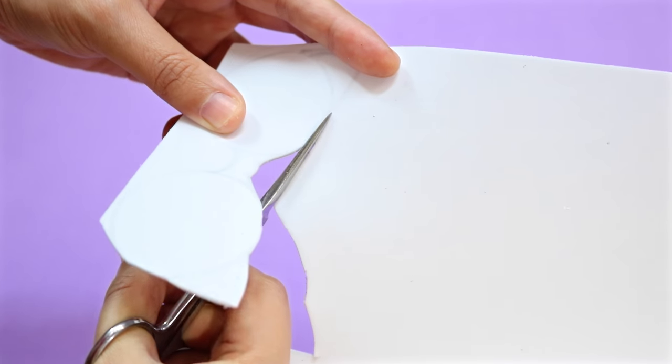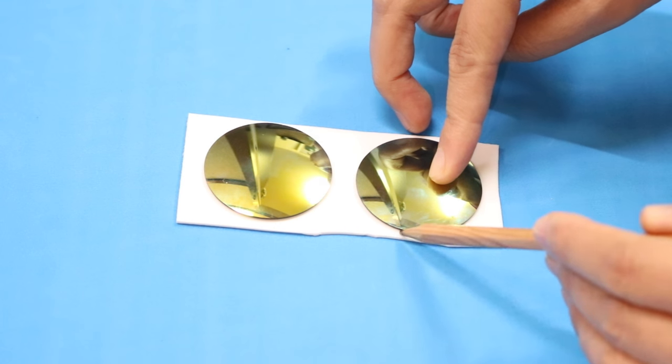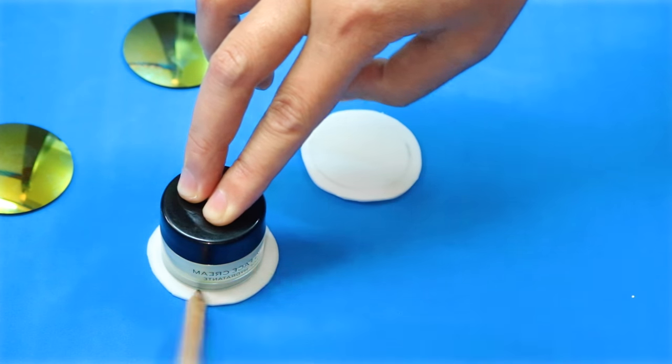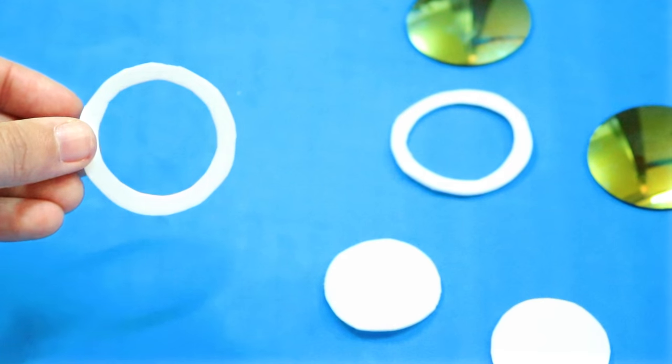After cutting it out, you'll end up with something like this. Now, on another piece of foam, use your lenses to trace out 2 more circles. Cut them out, then draw a smaller circle on each of them. Continue cutting to get rid of the smaller circles inside.